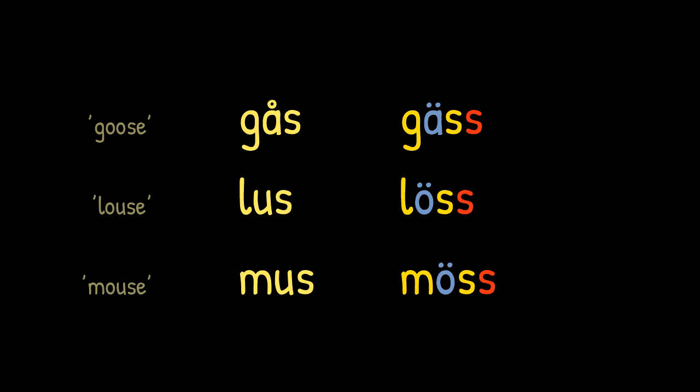The final group doesn't really take any ending either, but instead distinguishes itself by lengthening the final consonant. The words in this group are gos, lus and mus, with the plural forms gäss, löss and möss, with the vowels shortened as a result of the consonant being lengthened. The change in pronunciation of the letter g is not irregular at all but is a natural consequence of the shift in vowels.